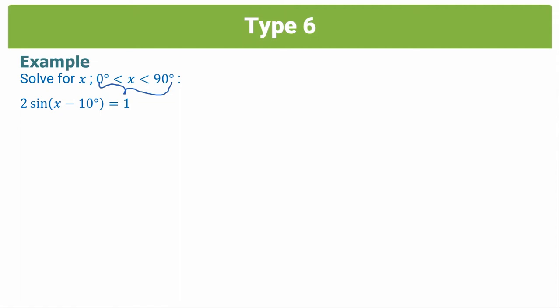The question we have here is a bit different, and it's going to allow us to explore what step three meant when I said set the argument equal to the value you've obtained on your calculator. So we are told that 2 sin(x - 10°) = 1.